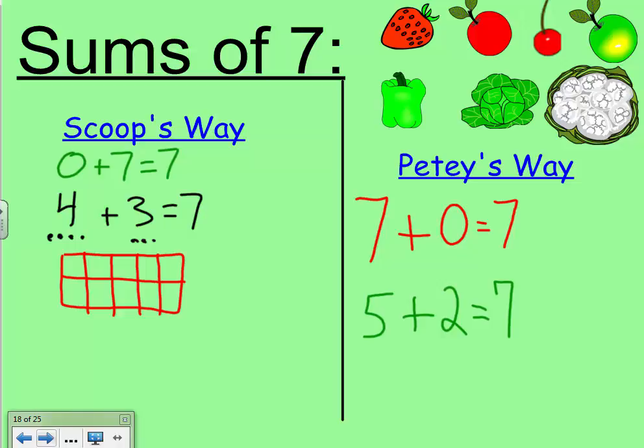Now, when Scoop looks at that picture, she sees 1 white object, the cauliflower, and then 6 things that are not white.